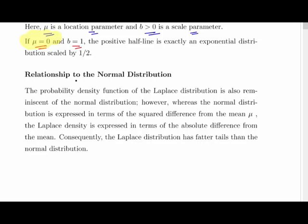The relationship to the normal distribution — this is why we would actually study this. The probability density function of the Laplace distribution is also reminiscent of the normal distribution. However, whereas the normal distribution is expressed in terms of the square difference from mean mu, the Laplace density is expressed in terms of the absolute difference from mean mu. Consequently, the Laplace distribution has fatter tails than the normal distribution.